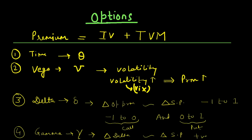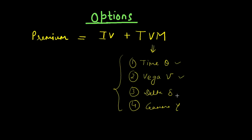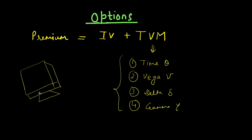Gamma is positive for both call and put options because it measures the sensitivity of change in delta due to the change in stock price. Together these four factors — time, volatility or vega, delta, and gamma — are called option Greeks. I have not given a detailed explanation of each, but you now have a fair idea of how time value of money is calculated using these four factors. There are complicated models designed scientifically, and once you feed all four factors in, you get the output as TVM.